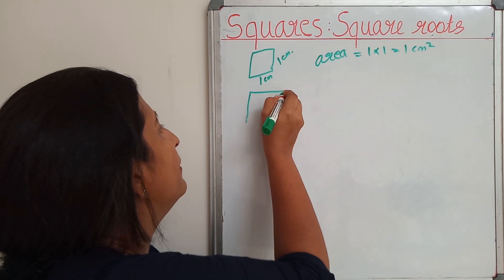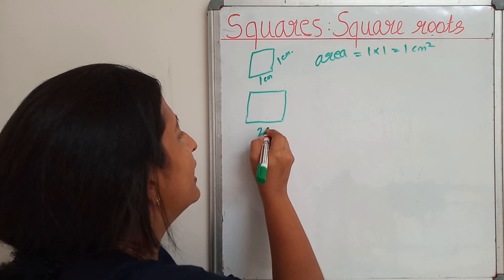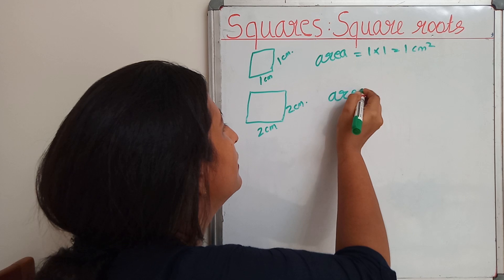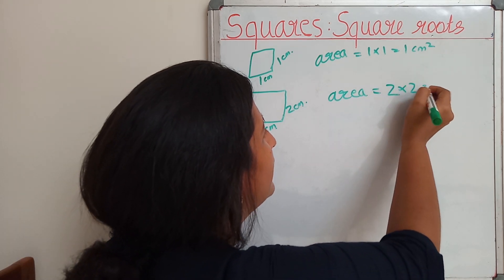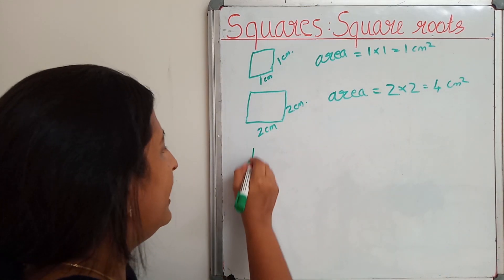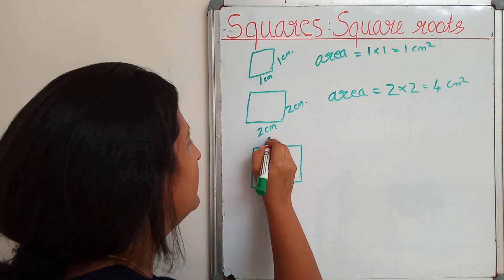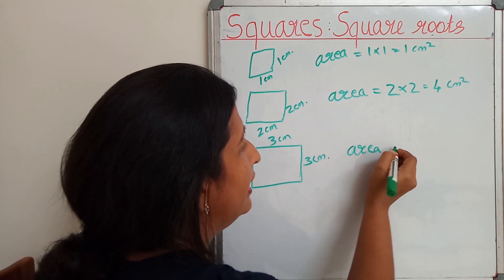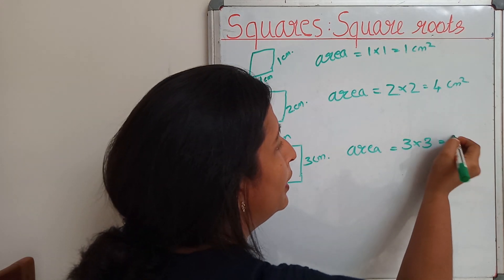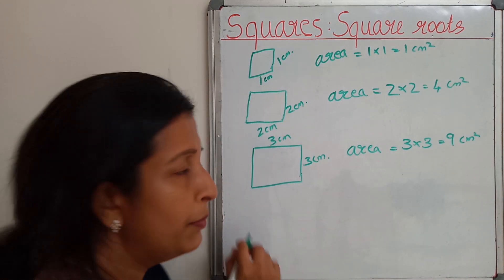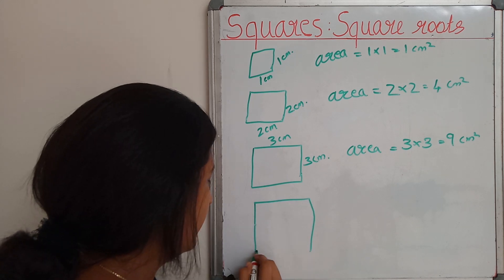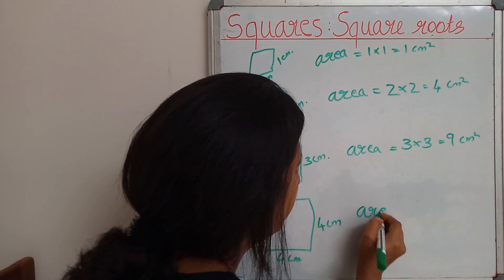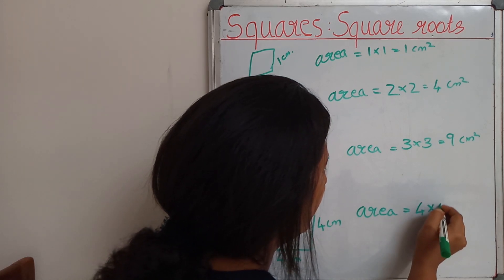Again, I am drawing one more square, and all sides are 2 cm. Then the area is equal to 2 x 2 = 4 cm square. Again, for a square of 3 cm, the area will be 3 x 3 = 9 cm square.